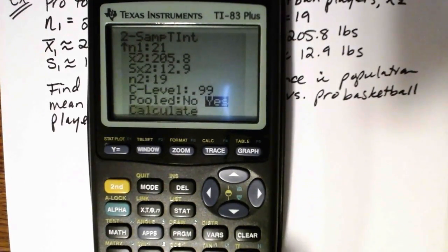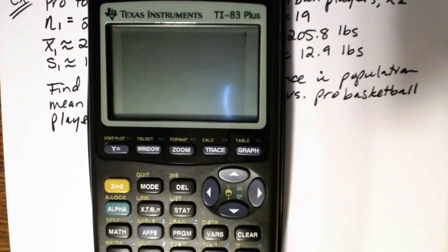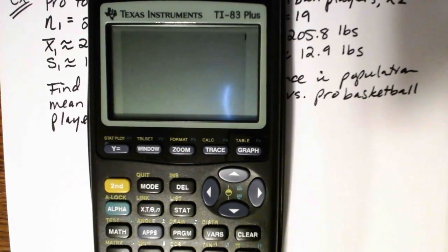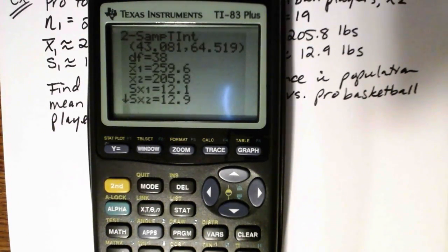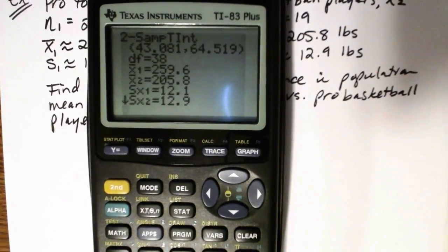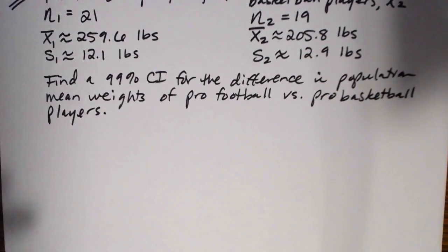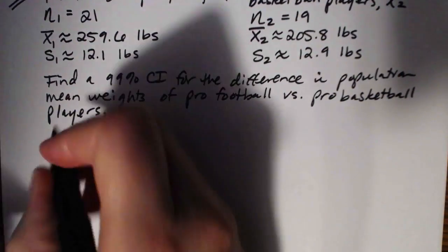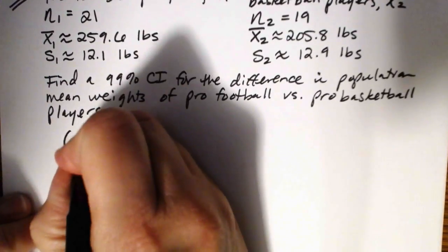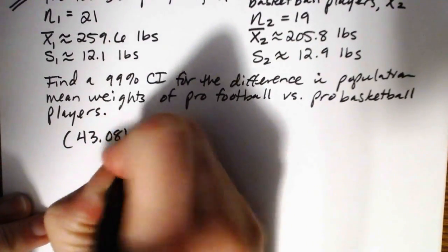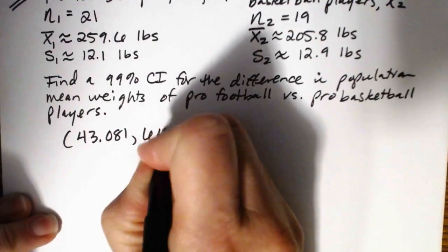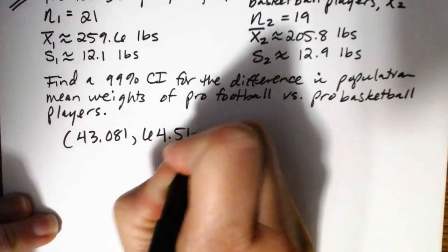Then we calculate. The calculator will take a moment, and then we get our values out: the interval is (43.081, 64.519).